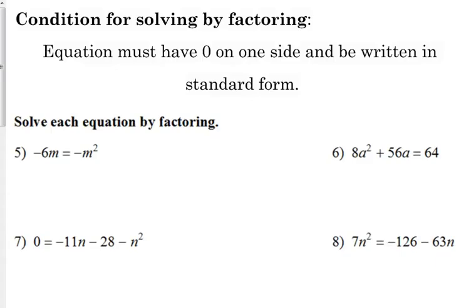I'm going to choose to move the m squared to the left side because if I do that, it gets rid of that negative. If we can avoid negatives with our quadratic terms, it's going to make things better off later on. So I'm going to add m squared to both sides, so we have m squared minus 6m is equal to zero.